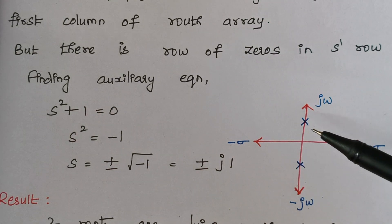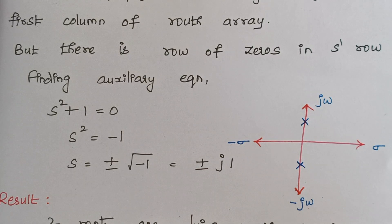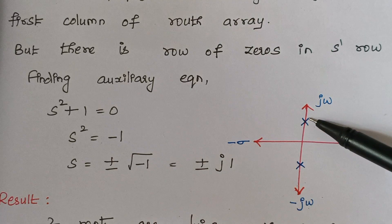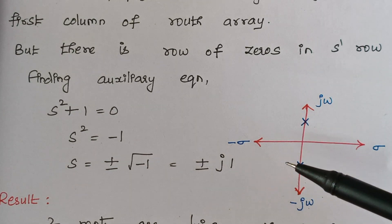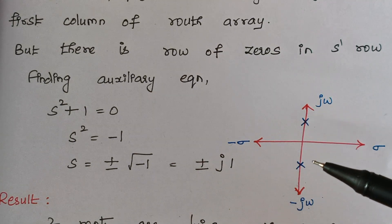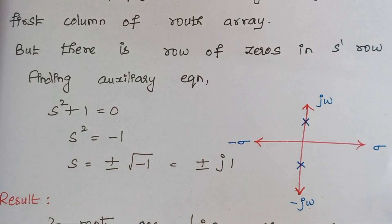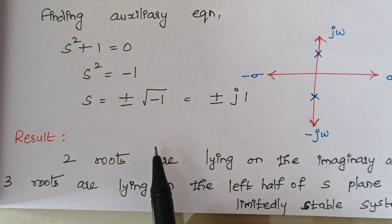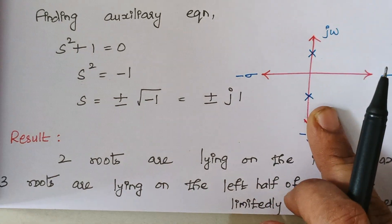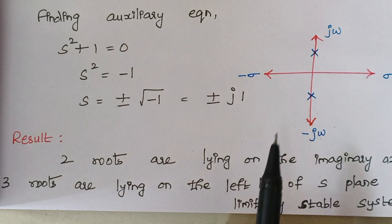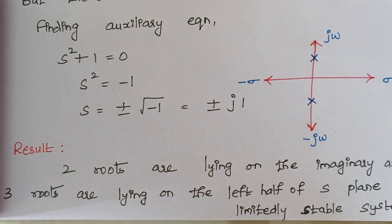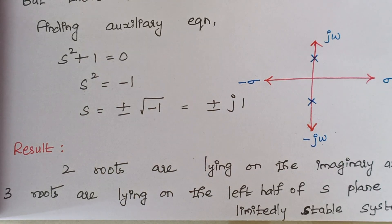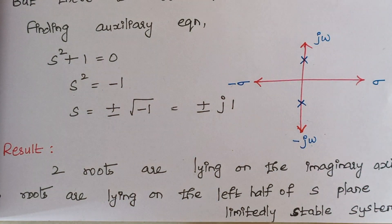For this characteristic equation, we have 5 roots total since the maximum power is 5. Among these 5 roots, two roots lie on the imaginary axis and the remaining 3 roots lie on the left half of the S-plane, because the first column of the Routh array has no sign change. Therefore, the system is limitedly stable — meaning for certain range of inputs the system remains stable, and for the remaining cases it will be unstable.